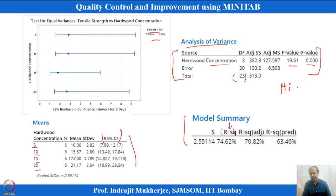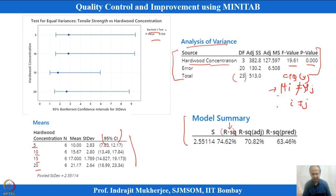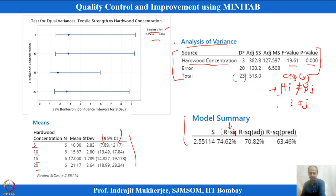The ANOVA tells us that at least two levels are significantly different, but not which specific levels differ. For that, we need a multiple comparison test. The Bartlett test was used for equal variance when normality is assumed; Levene's test is a non-parametric alternative for skewed data or small sample sizes.